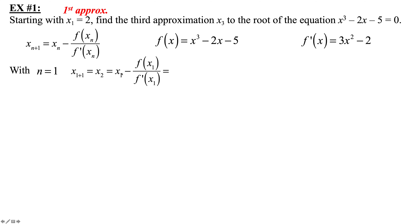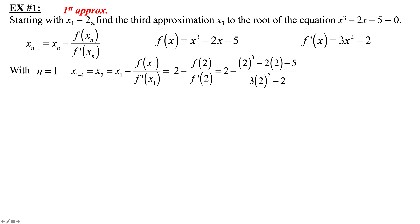x sub 2 equals x sub 1 minus f(x sub 1) over f'(x sub 1). Substituting x sub 1 equals 2: 2 minus (2 cubed minus 2 times 2 minus 5) over (3 times 2 squared minus 2). The calculator gives us 2.1.